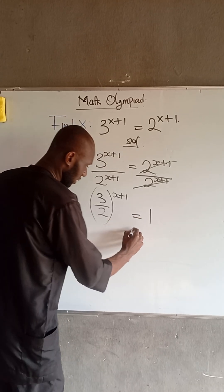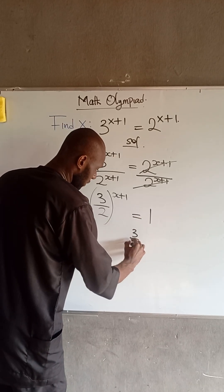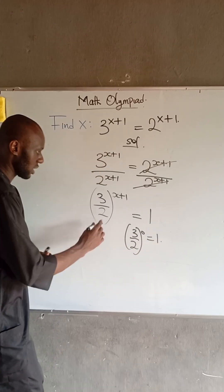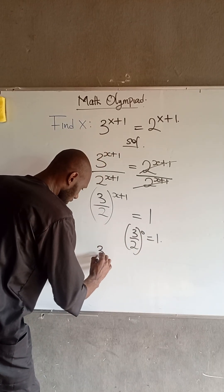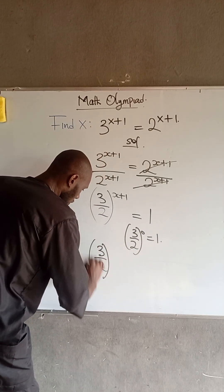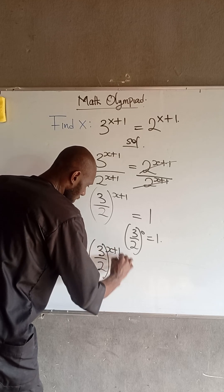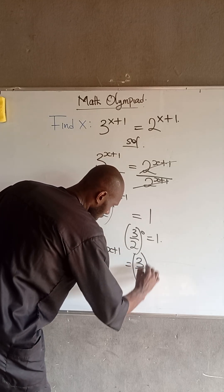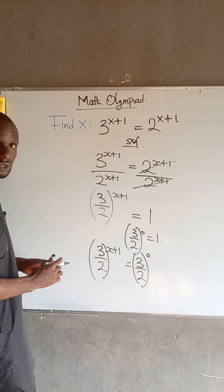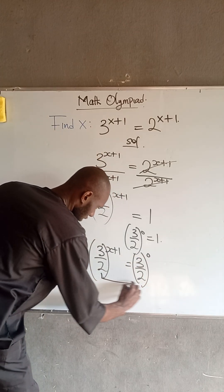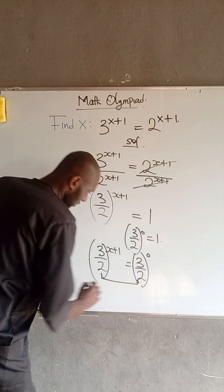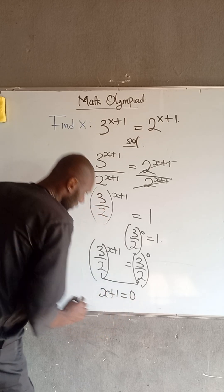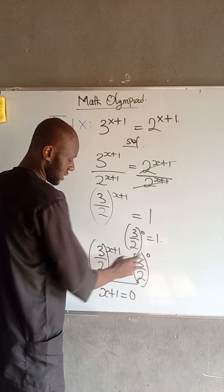Now, recall that (3/2) raised to the power of 0 is equal to 1. So therefore, we have that (3/2) raised to the power of x plus 1 is equal to (3/2) raised to the power of 0. So at this point, since their bases are the same, we have that x plus 1 is equal to 0, because we equate the exponents.